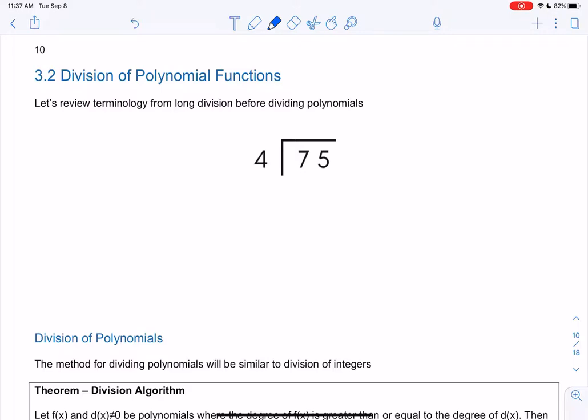So I'm going to review long division in algebra just to review some terminology. This would be 75 divided by 4. We put 75 inside. It's called the dividend. And then divided by 4, 4 was called the divisor.